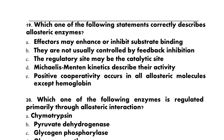Question 19: Which one of the following statements correctly describes allosteric enzymes? A) effectors may enhance or inhibit substrate binding, B) they are not usually controlled by feedback inhibition, C) the regulatory site may be the catalytic site, D) Michaelis-Menten kinetics describe their activity, E) positive cooperativity occurs in all allosteric molecules except hemoglobin. The correct option is A: effectors may enhance or inhibit substrate binding.